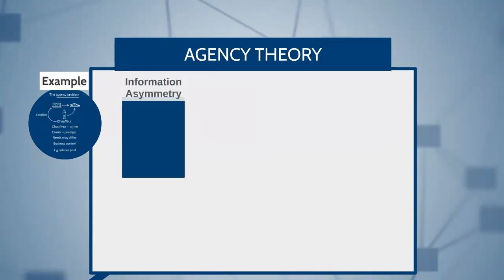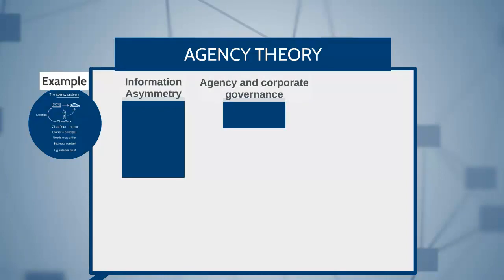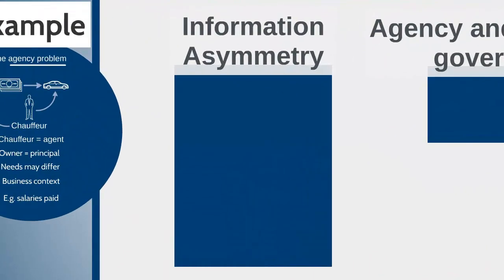Let's move on to agency theory topics. Information asymmetry is already on screen, and then we're going to look at agency and corporate governance. Asymmetry simply means there's no symmetry — information asymmetry is an agency problem where the directors have more information about the organization than the shareholders do, and that's why there's no symmetry.